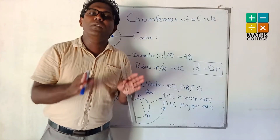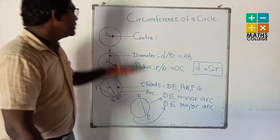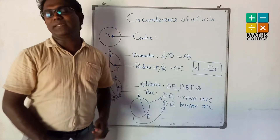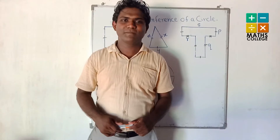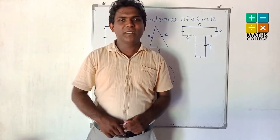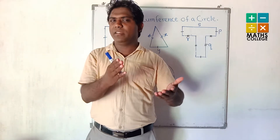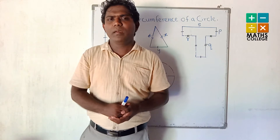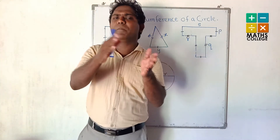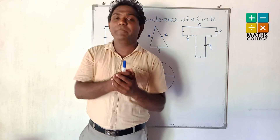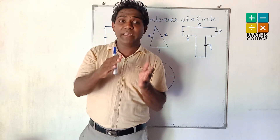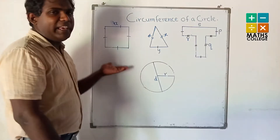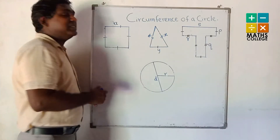Now you remember our previous knowledge of the elements of the circle. Now we are going to find the perimeters of these figures. What is the perimeter? Perimeter means the sum of lengths around a plane figure. According to your knowledge, how do you find the perimeter of a square?